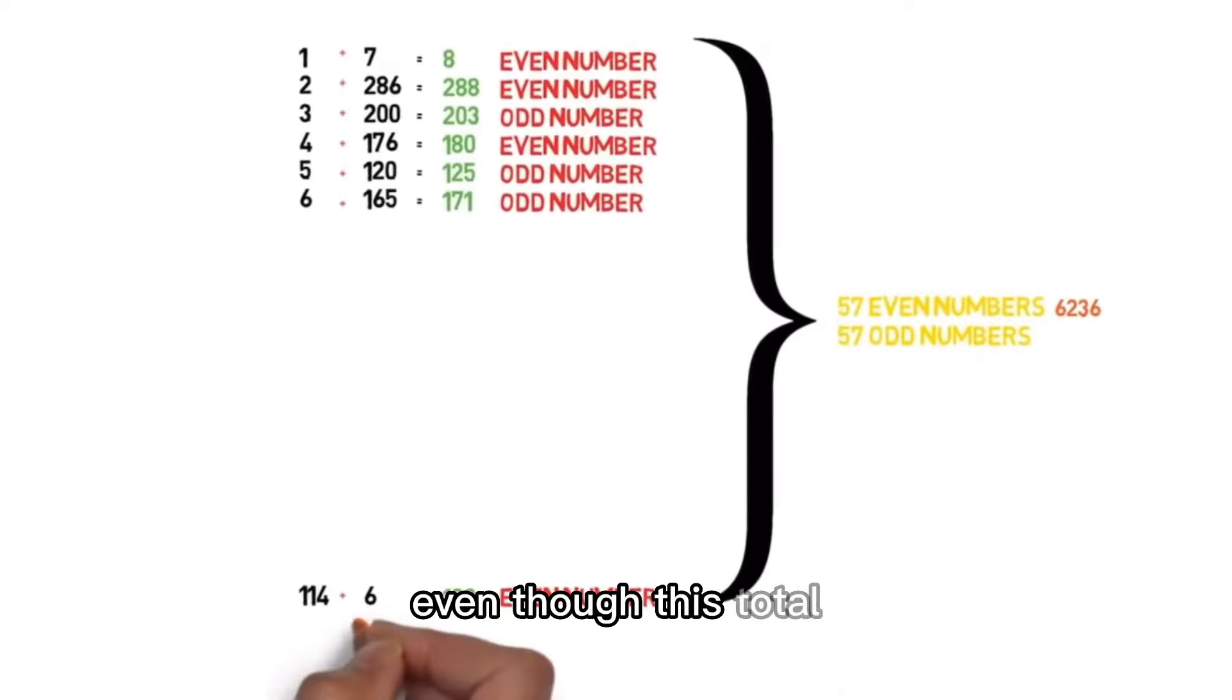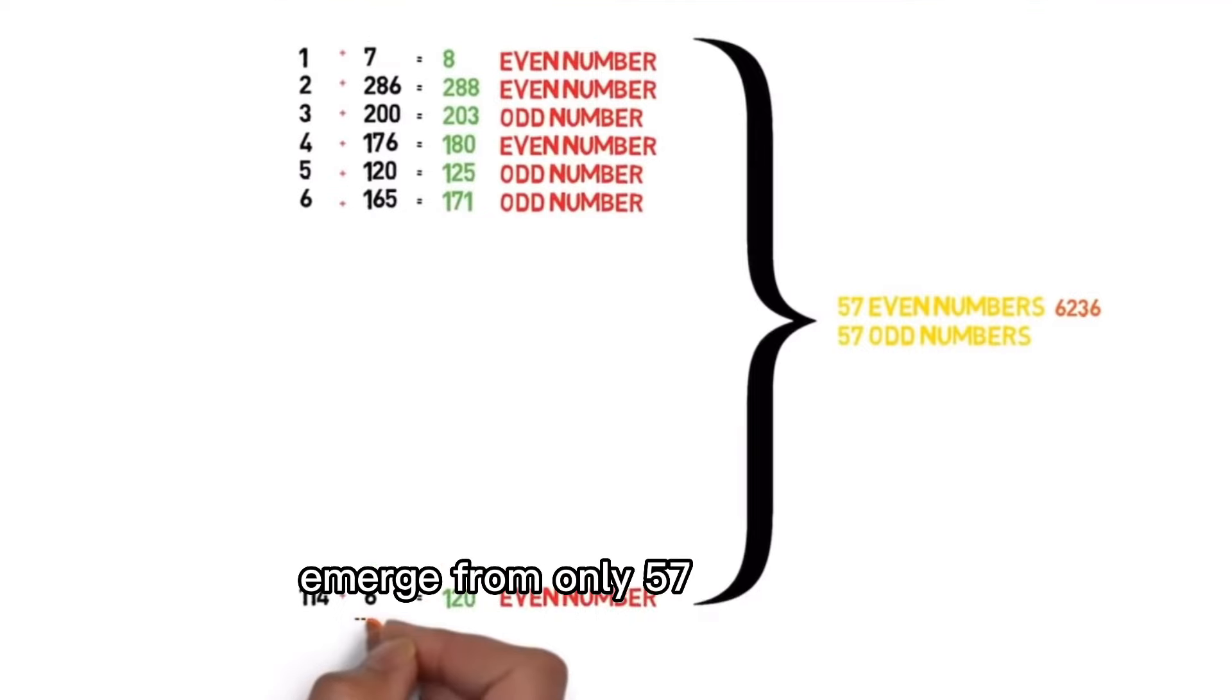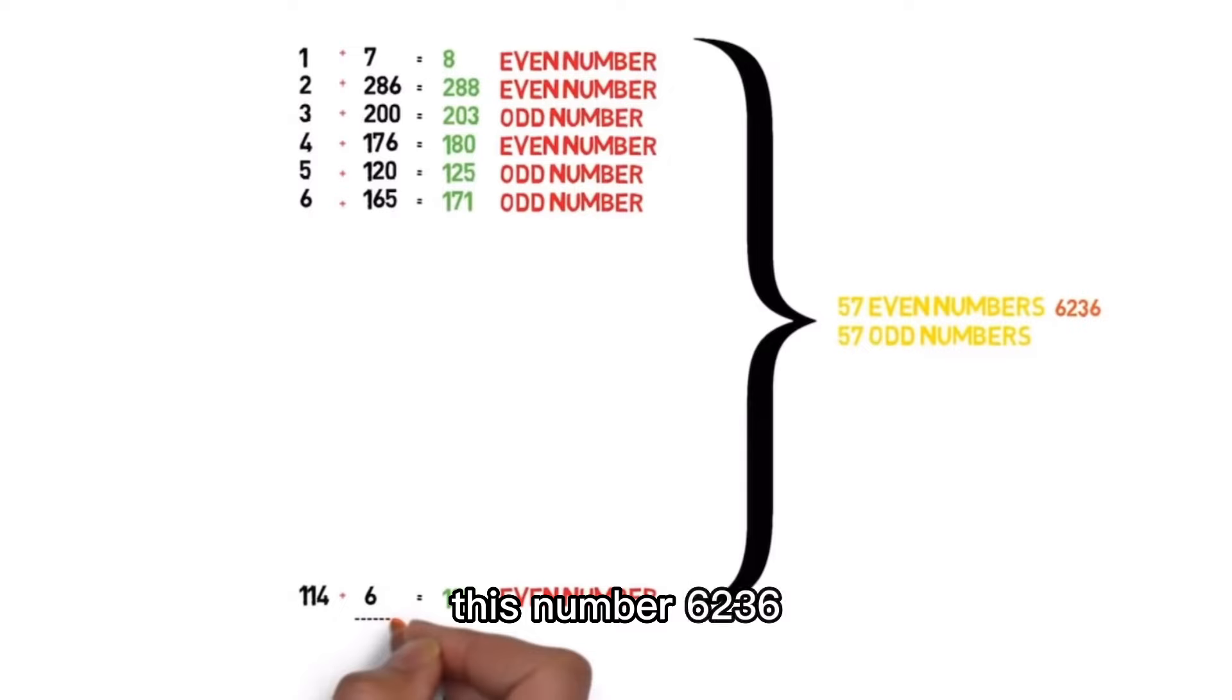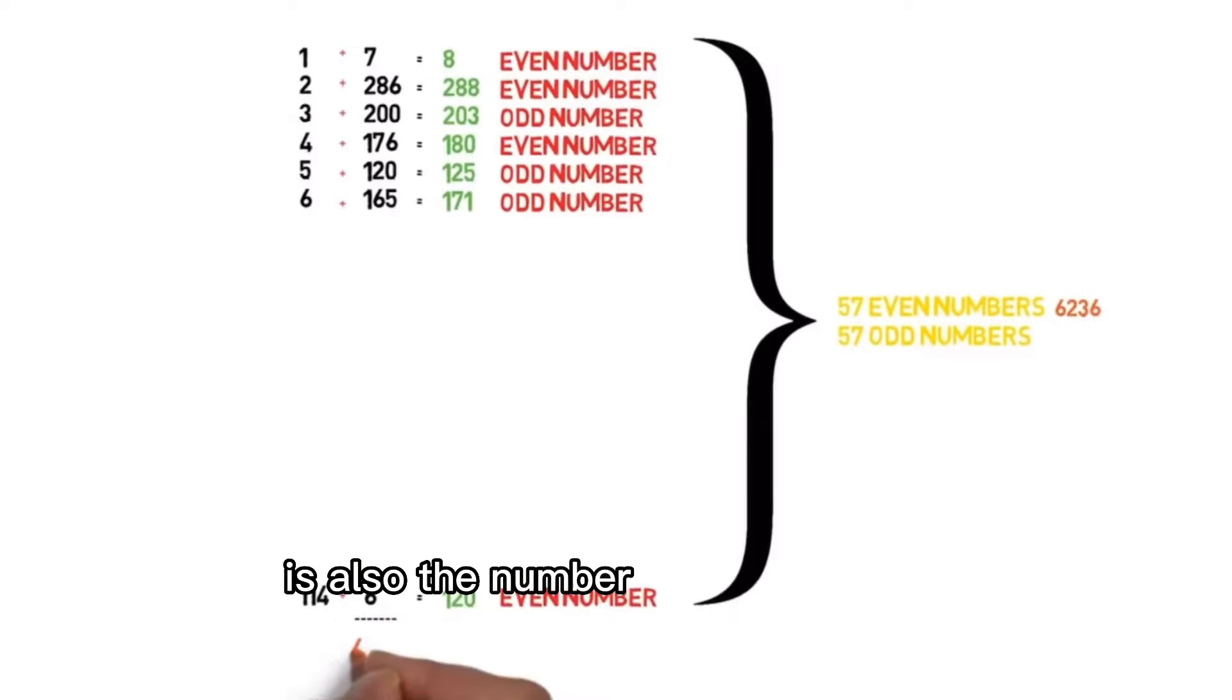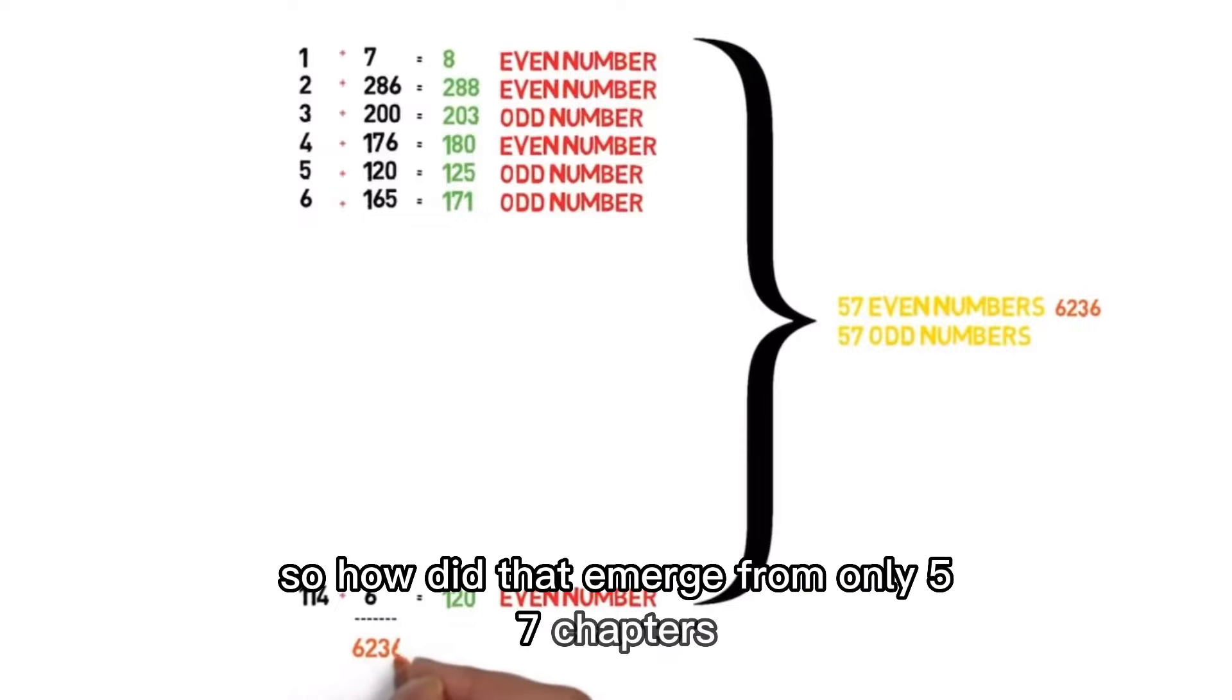Even though this total emerged from only 57 chapters of the Quran, this number, 6,236, is also the number of verses in the entire Quran. So how did that emerge from only 57 chapters?